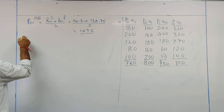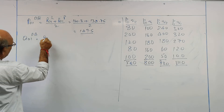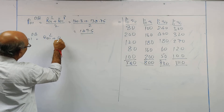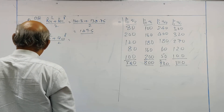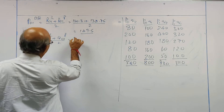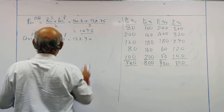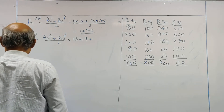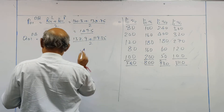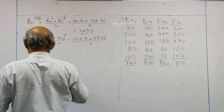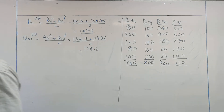This is equal to 149.5. Next, quantity index number of Dorbish-Bowley: quantity index number of Laspeyres plus quantity index number of Paasche's divided by 2. Quantity index number of Laspeyres is 137.9, quantity index number of Paasche's is 119.35, divided by 2. This is equal to 128.6.